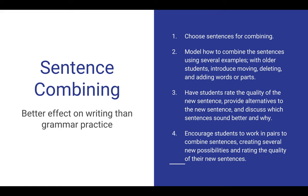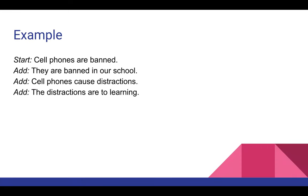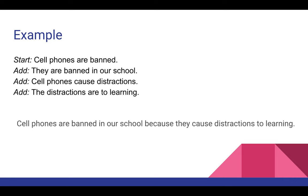Let's see what sentence combining looks like. For example, starting with 'Cell phones are banned,' we add 'they're banned in our school,' 'cell phones cause distractions,' and 'distractions are to learning.' If we take that sentence and those three other sentences and combine them into one, it looks like this: 'Cell phones are banned in our school because they cause distractions to learning.'